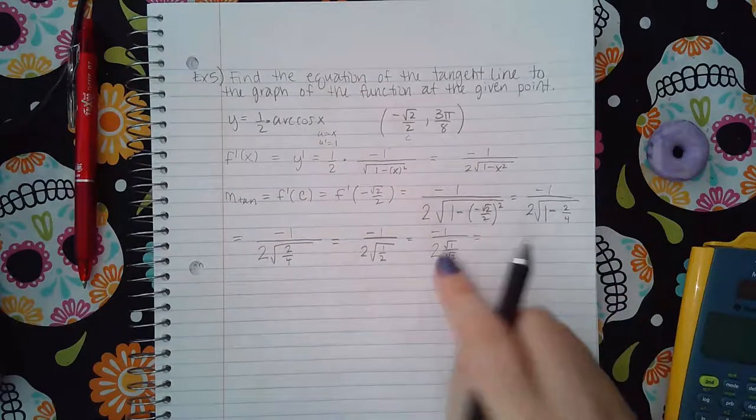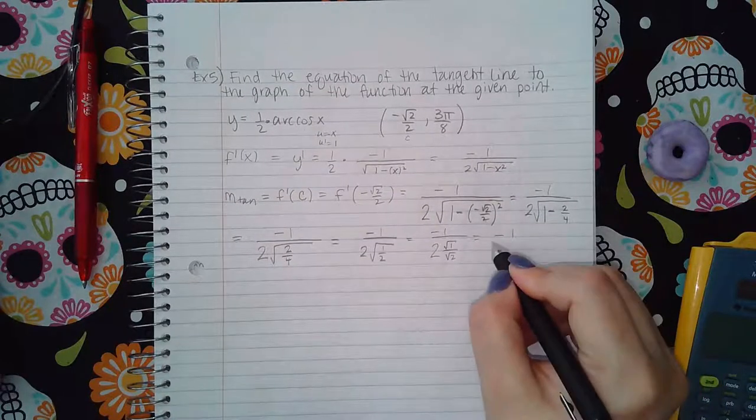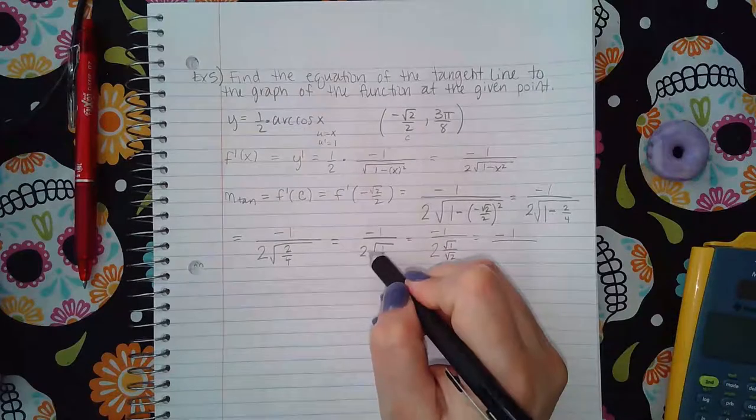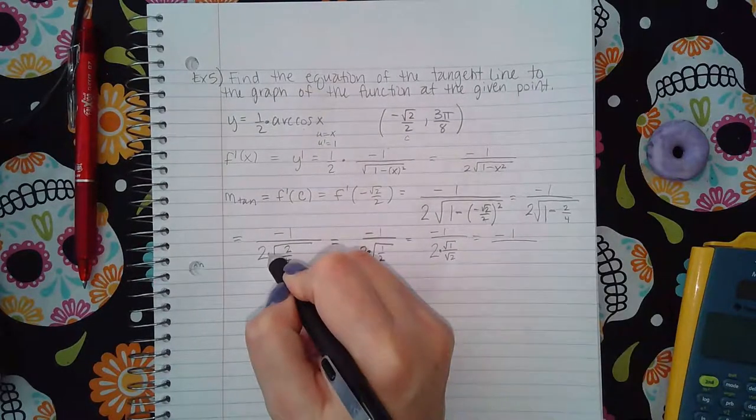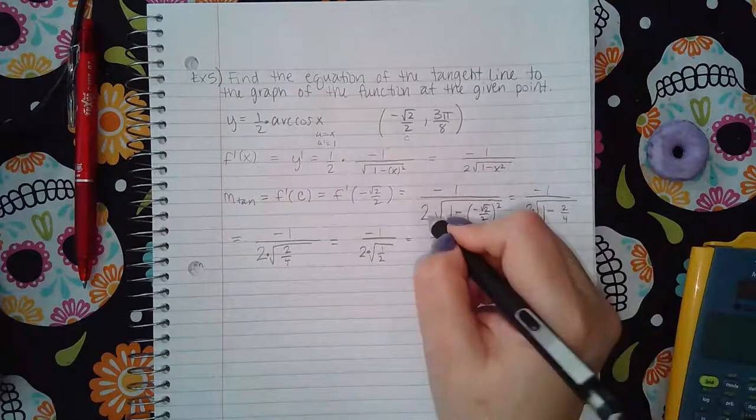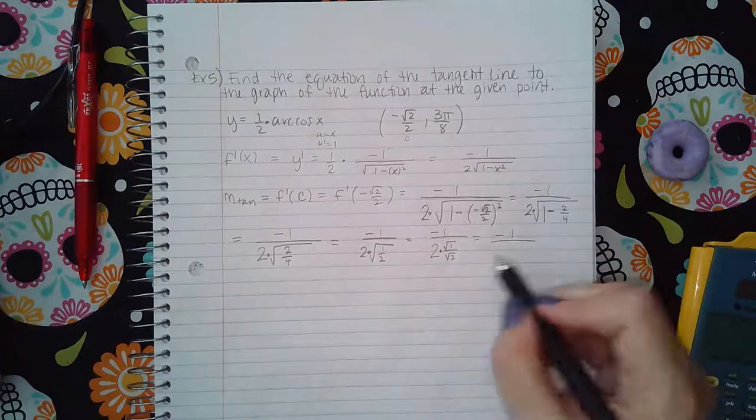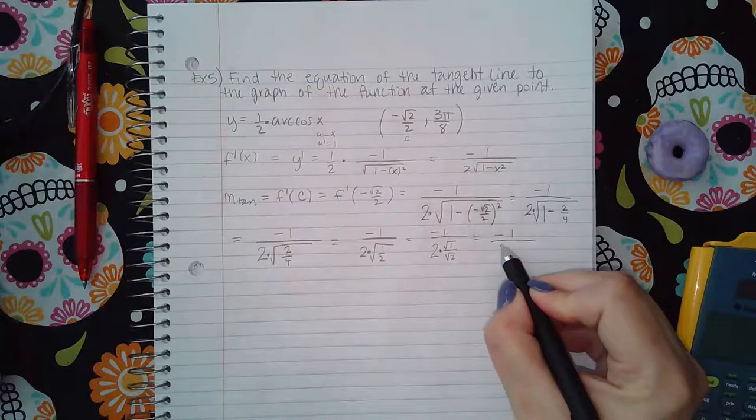Now what is one minus two over four? That would be four over four minus two over four, which is two over four, or if you say what is one minus one half, it's one half, right? So this is just one half. And then if I take this root of each of those pieces individually...